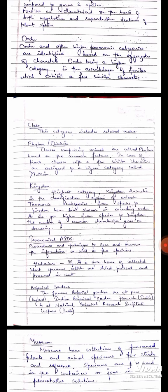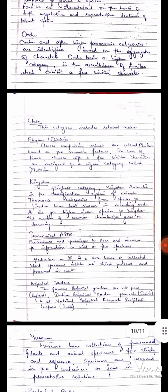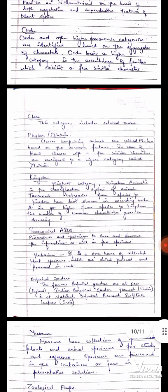The next heading is taxonomical aids. Procedures and techniques to store and preserve the information as well as the specimens. In this topic it comes to herbarium. It is a storehouse of collected plant specimens which are dried, pressed and preserved in sheets.